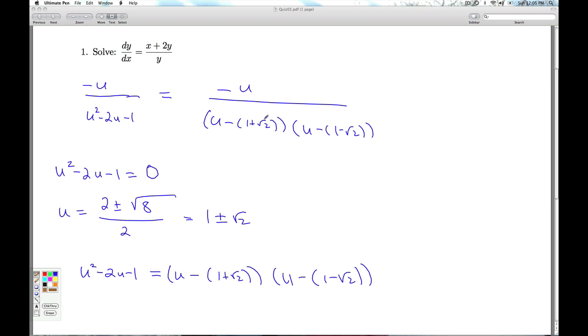If you take the time and want to multiply this animal out, you're going to get u² - 2u - 1. Now, you can do partial fraction decomposition on this.